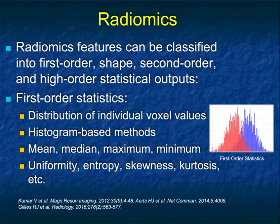Radiomics features can be classified into first order, shape, second order, and higher order statistical outputs. First order features are the distribution of individual voxel values — the simplest category — using histogram-based methods: mean, median, maximum, minimum, and such measurements as uniformity, entropy, skewness, and kurtosis.